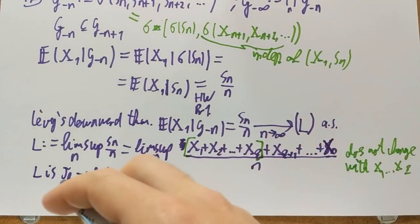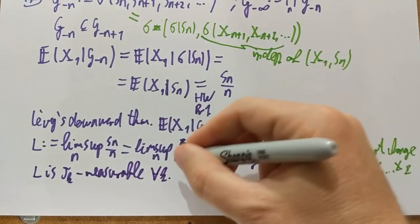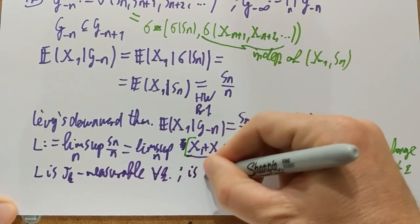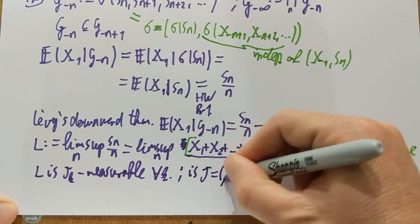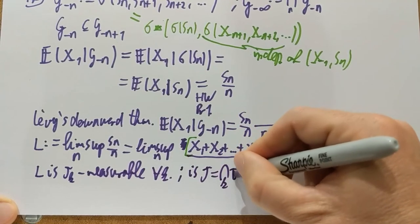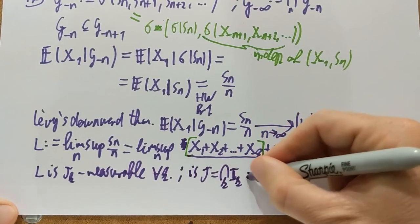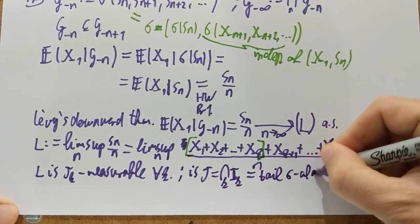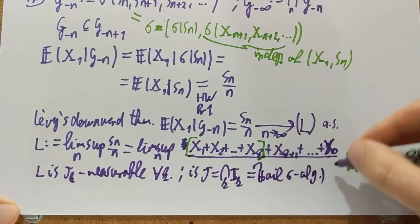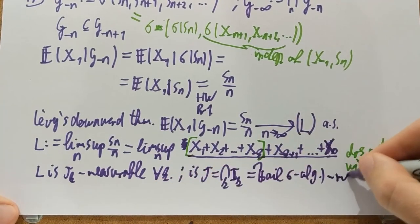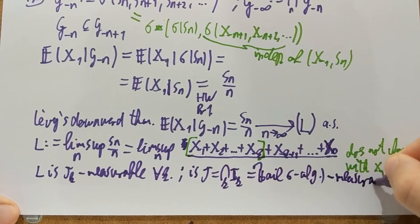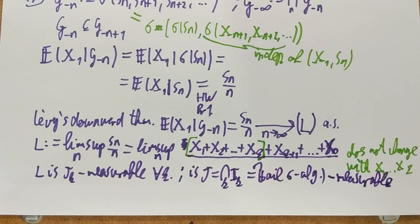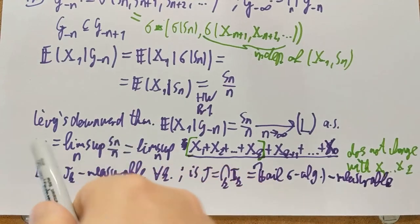Which means that it's intersection of tau_k measurable. In other words, this thing is also tau measurable. Remember, tau was the intersection of the tau_k's. And this was the tail sigma algebra. So this thing is tau measurable. This lim sup of S_N/N is tau measurable, is tail measurable. Now comes Kolmogorov's 0-1 law.